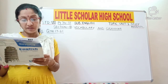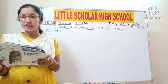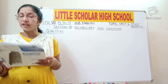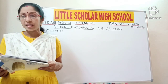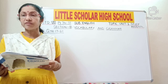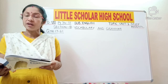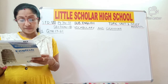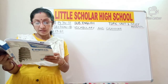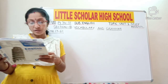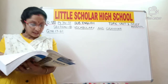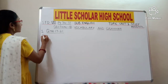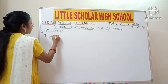Question number 17: here the word 'near' is underlined. We have to write the antonym of the underlined word. Antonym is a word which is opposite in meaning — simply, an opposite word. So the antonym of 'near' is 'far'. Answer for question number 17 is 'far'.